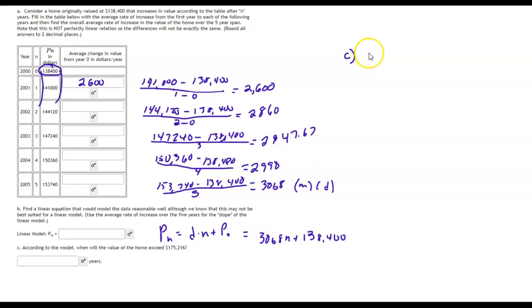we have $175,216 is our P value. That's the value of the house. And it's going to be 3,068N plus $138,400.